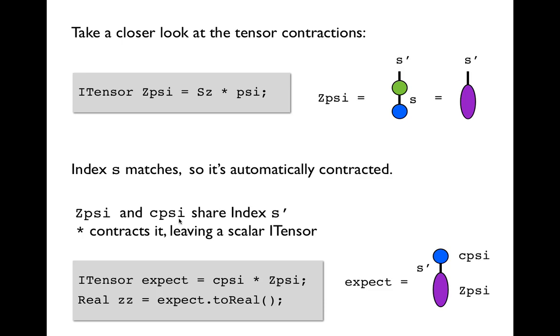Now we already prepared cpsi, the conjugate of psi, to have an index s prime by calling primed as we made a copy. So now that's perfectly set up to match the s prime on zpsi. And we do this contraction now separately. And s prime will be contracted, there are no other indices. So the remaining tensor, which we can store in a temporary here called expect, will simply be a scalar tensor. That's a tensor of rank zero, no indices.